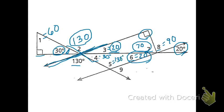And last but not least, angle 9 has to be 50 because it forms a linear pair with 130.